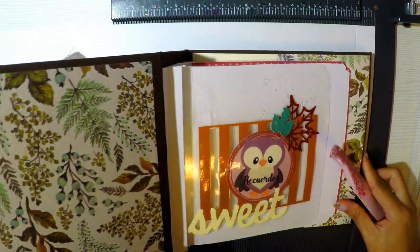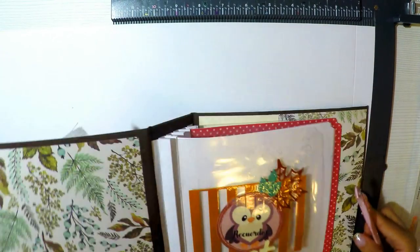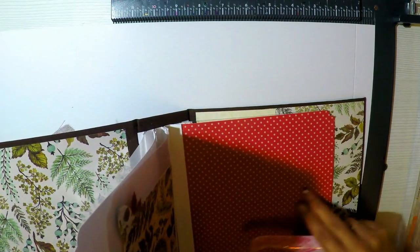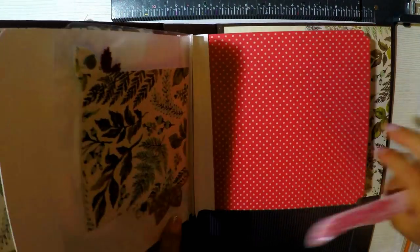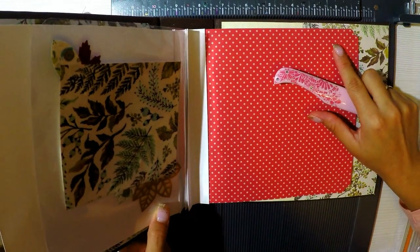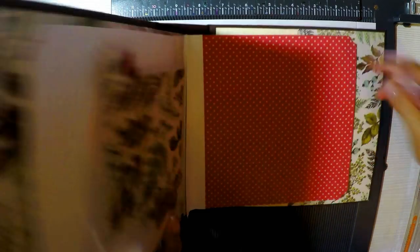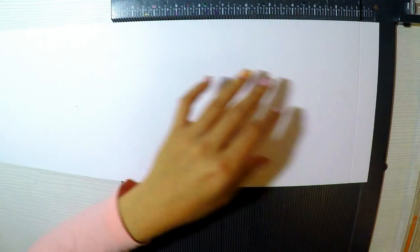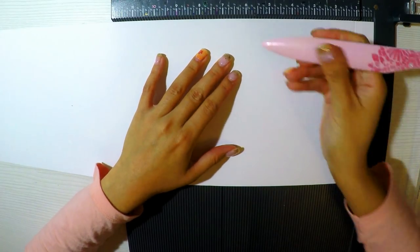Vamos a empezar con todo lo que es los desplegables. Vamos a poner el primero que va a ser en la primera hoja o en la de atrás, donde quiera, en cualquiera de las dos hojitas de cartulina que tenemos. Esta hojita de puntitos blancos, roja de puntitos blancos, es impresa, es un printable también porque he impreso tanto hojitas como fondos.